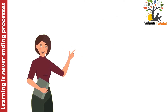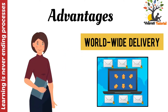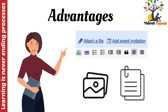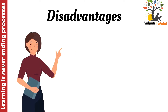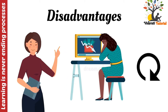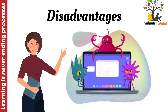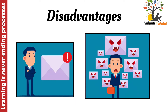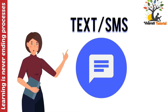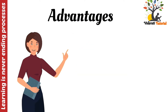Next is email. The advantages of email: it offers quick worldwide delivery, and files and images can be attached. The disadvantages: internet access is required — without internet you can't send email — viruses can be sent as attachments, and junk mail can be a problem.